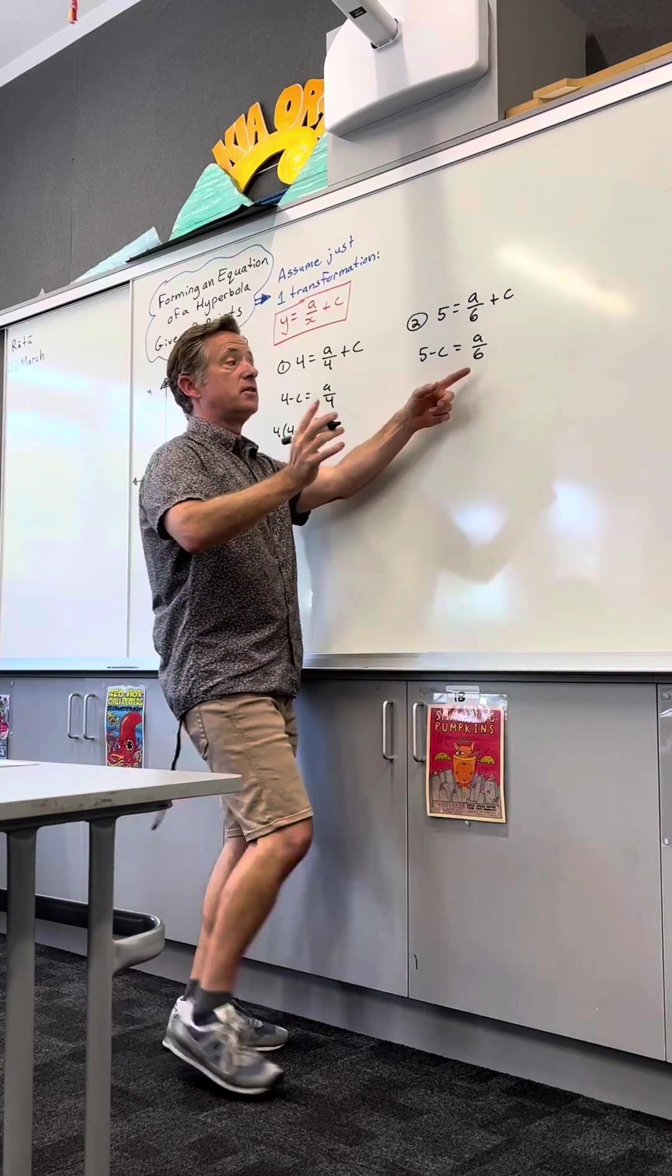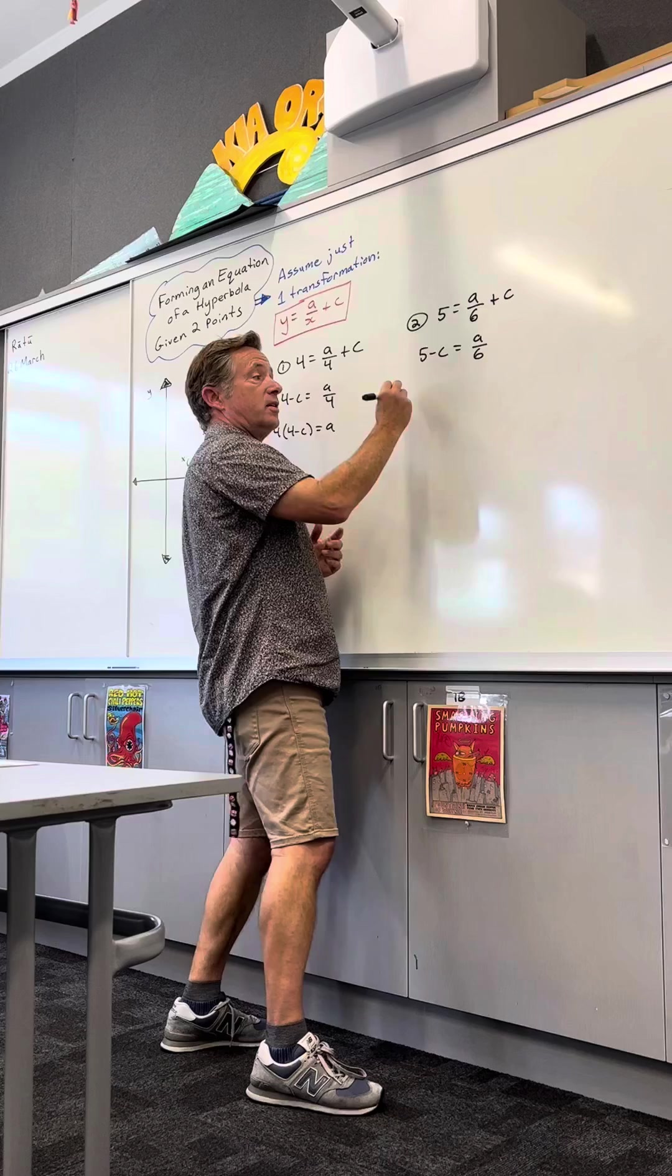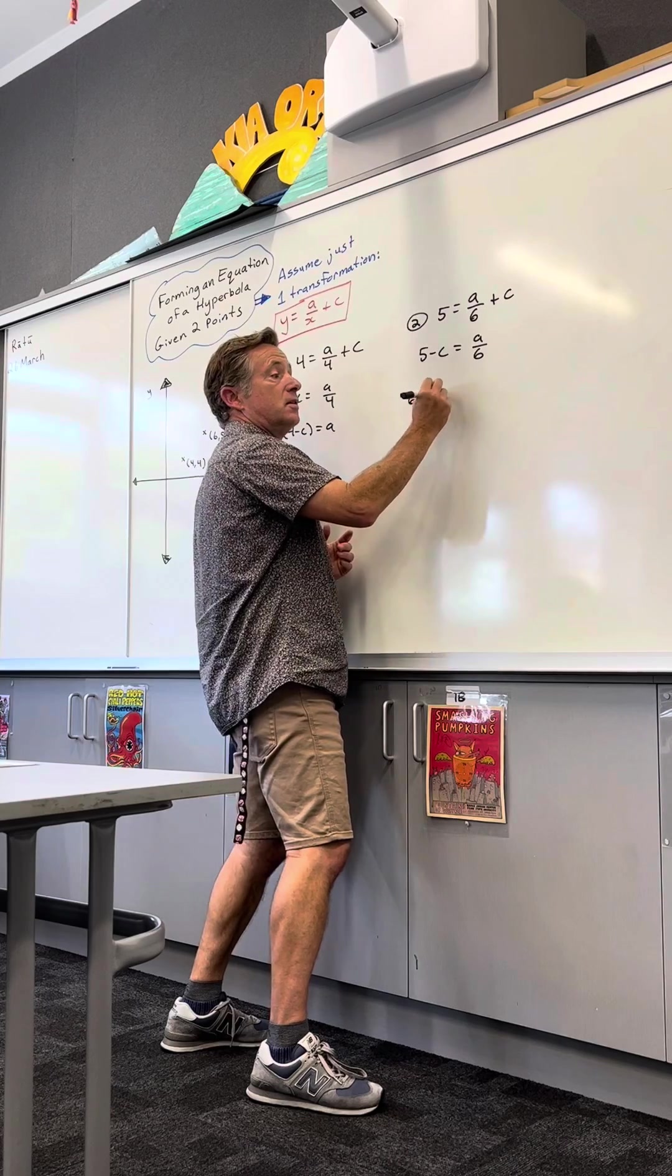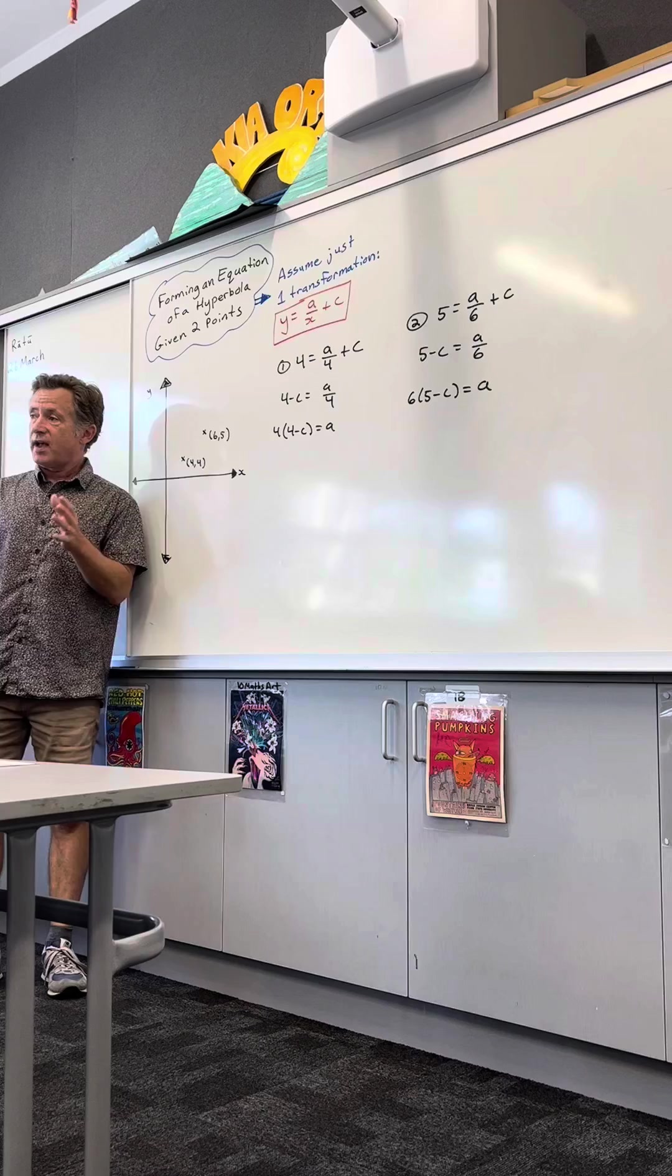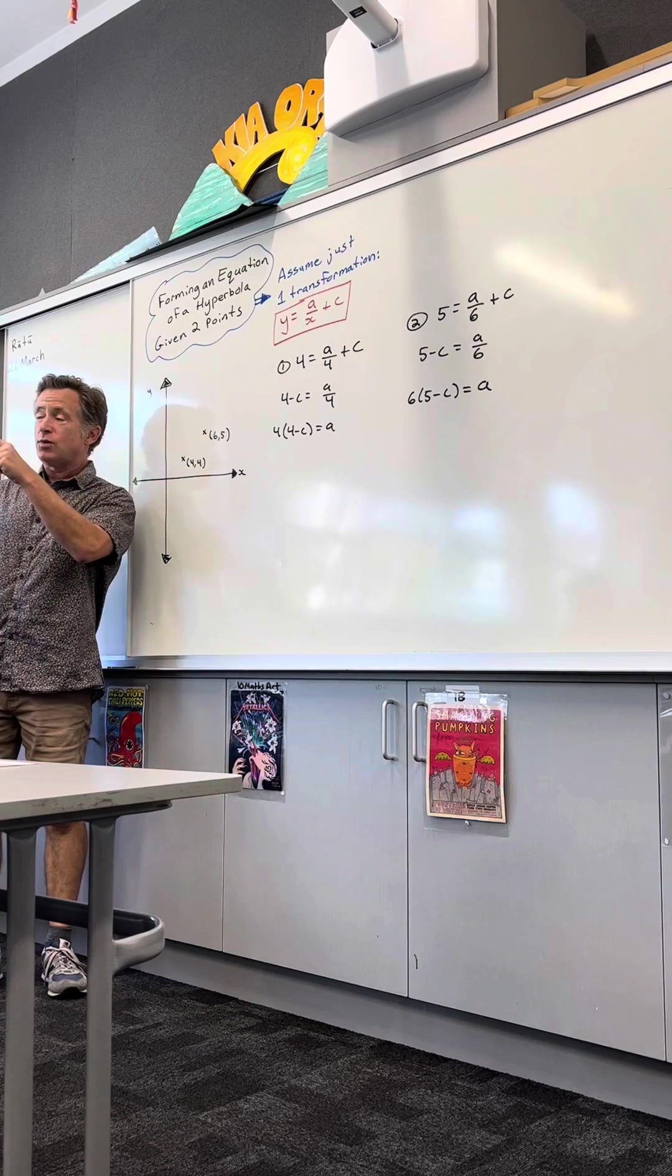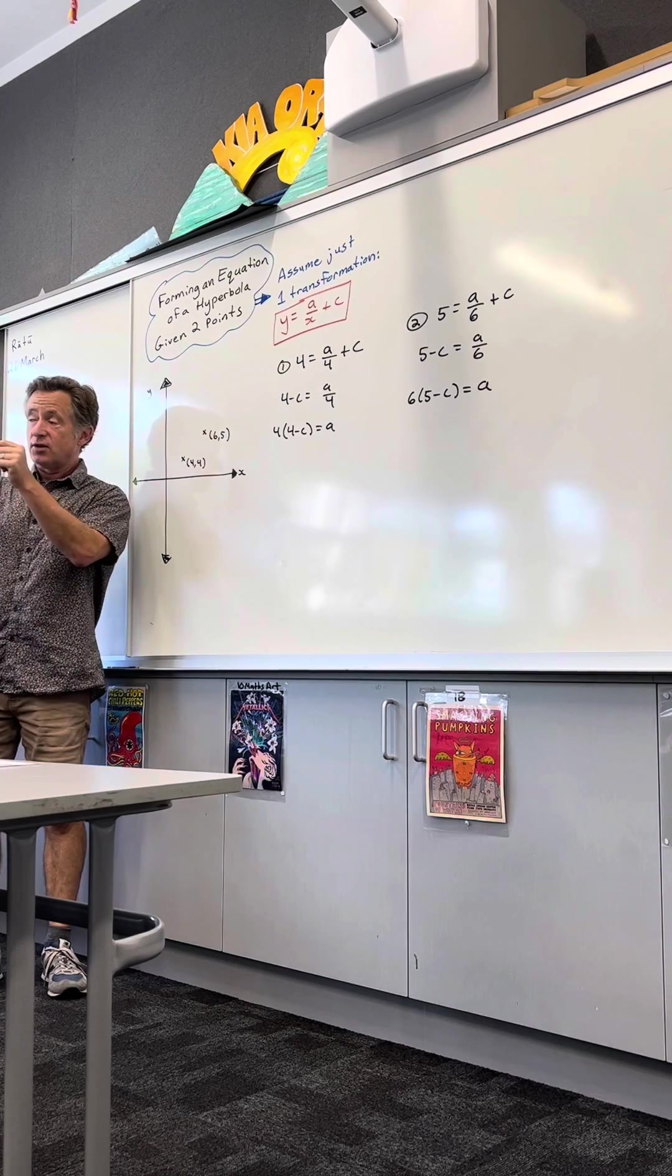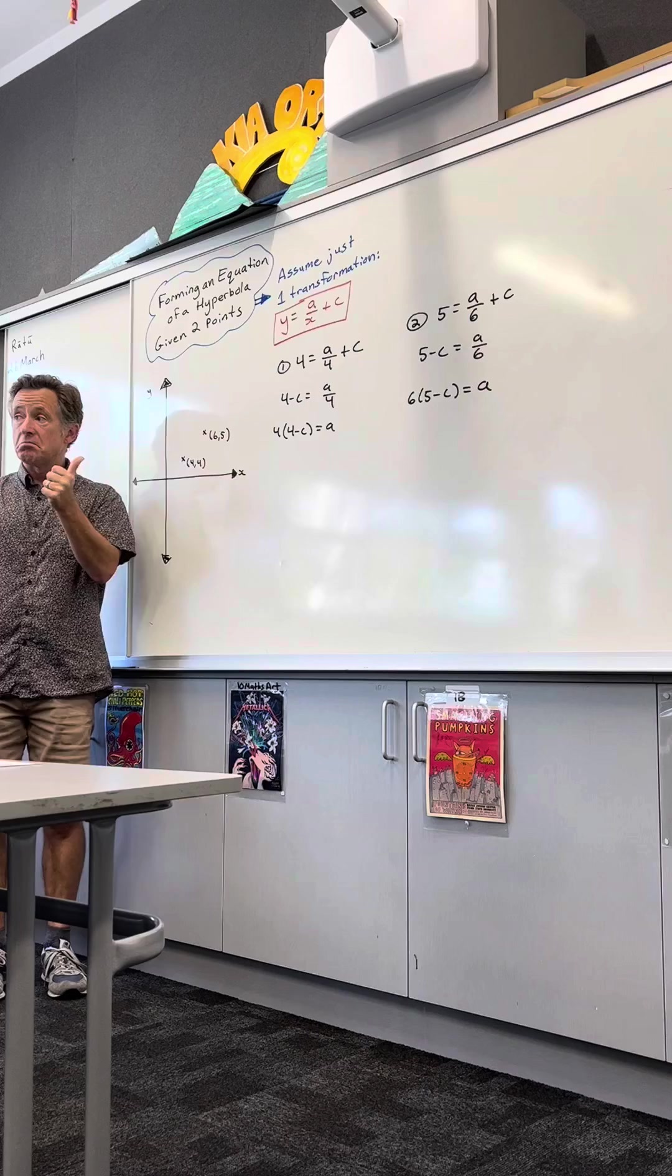And then I get a by itself over here, multiply this whole thing by 6, and I get a. Okay, so the rules of algebra say if I have two equations equaling the same thing, I can set those two equations equal to each other.